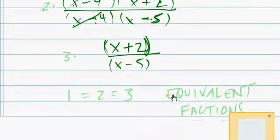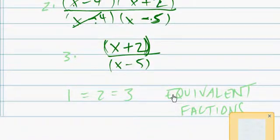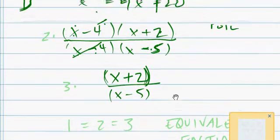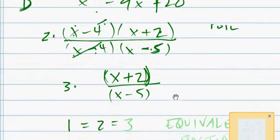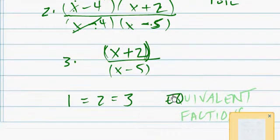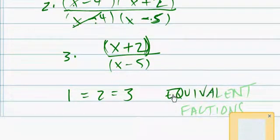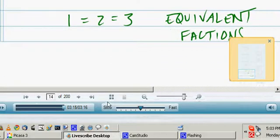So there you go. And this, in fact, this rational expression and this rational expression and this rational expression are all equal. 1 equals 2 equals 3 because they're all equivalent fractions.